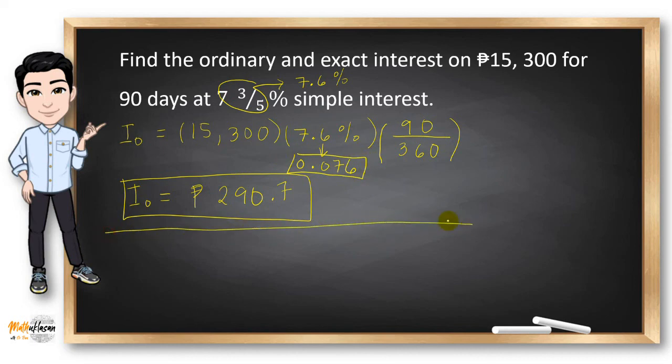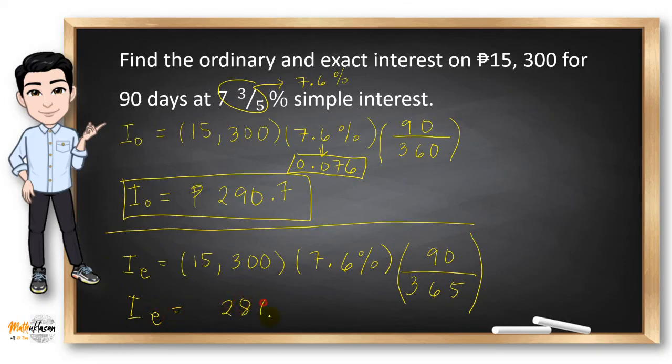Now, what if we're going to solve for the exact interest? If we are finding the exact interest, we will just follow the same formula but we need to change the denominator into 365. And the answer is P286.72.